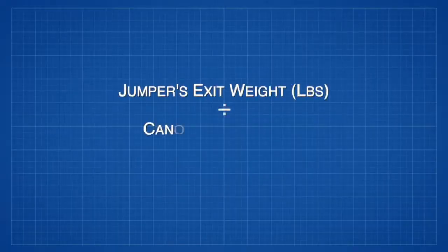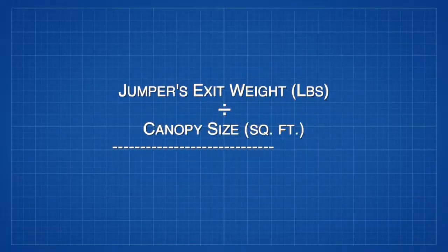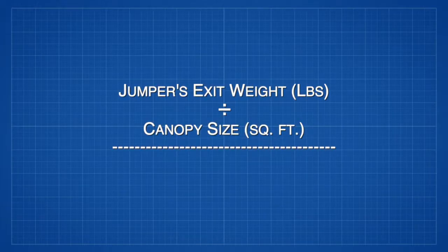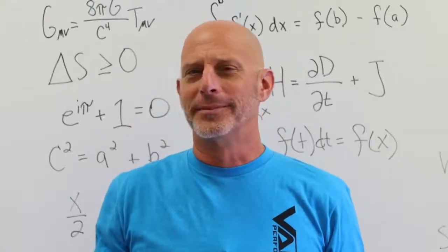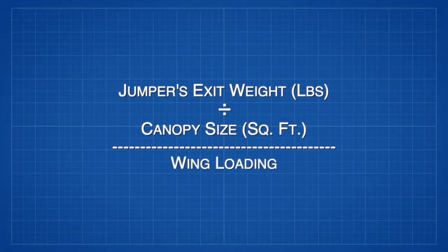Now that you know your exit weight, you're going to divide it by the square footage of the canopy that you're jumping or planning to jump. Yes, you can use a calculator. And voila, you have your wing loading.